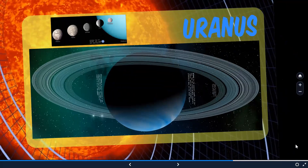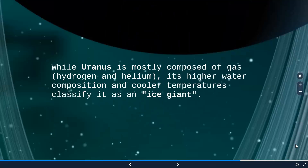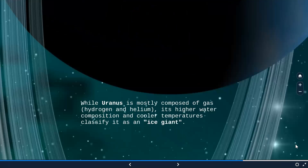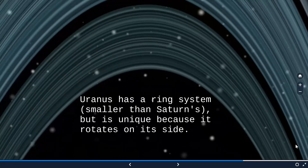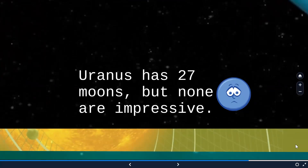Moving on to the seventh planet, Uranus — which has the third largest planetary radius and the fourth largest planetary mass in the solar system. Uranus is also mostly composed of gases like hydrogen and helium, but it has higher water composition and cooler temperature, so it is classified as an ice giant. Uranus has a ring system, obviously smaller than Saturn's, and its unique characteristic is that it rotates on its side.